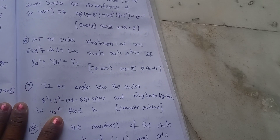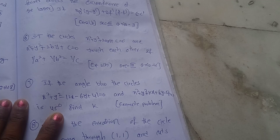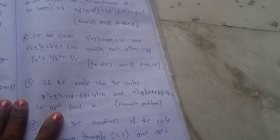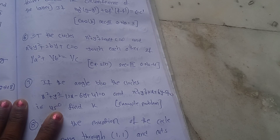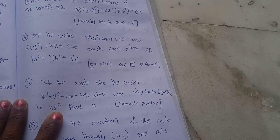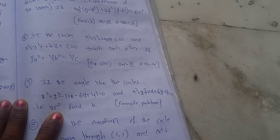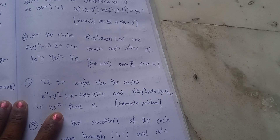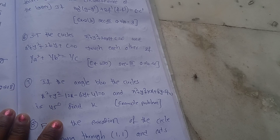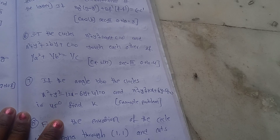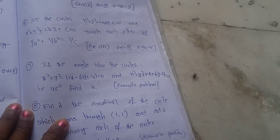Sixth question: show that the circles x² + y² + 2ax + c = 0 and x² + y² + 2by + c = 0 touch each other if 1/a² + 1/b² = 1/c. This is Exercise 2B, Section 3, Question 4.